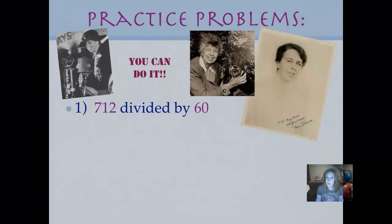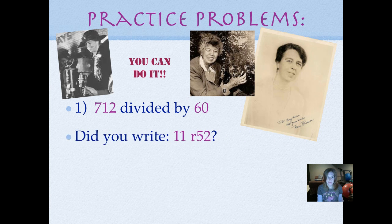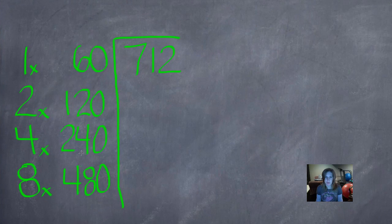Our first practice problem is 712 divided by 60. Go ahead and work that out using the crazy way and push play when you're ready. Did you write 11 remainder 52? Let's see how we did that. So I went ahead and wrote the problem in and set up my doubles division part. Check to make sure that your doubling numbers are the same as mine because that's a common area to make a mistake.